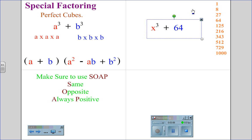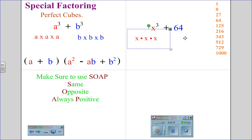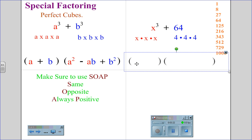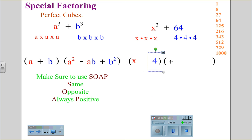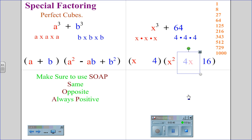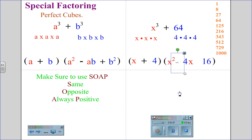For the statement a cubed plus 64, we recognize that x cubed is x times x times x, and 64 is 4 times 4 times 4. We start with our parentheses, place in the first factor x, place in the second factor 4. Square the first factor to get x squared, square the second factor: 4 squared is 16. Multiply the two factors to get the middle term: 4 times x. Using the acronym SOAP — same sign first: positive; opposite sign second: negative; and the last sign is always positive. The factors for x cubed plus 64 are x plus 4 times the quantity x squared minus 4x plus 16.